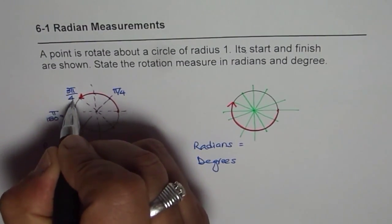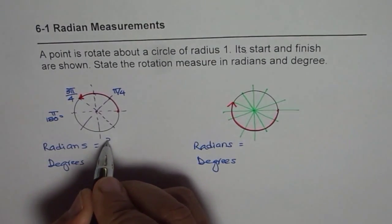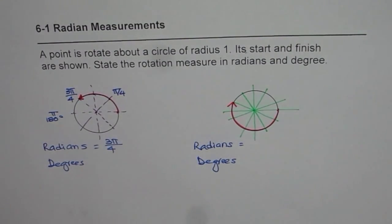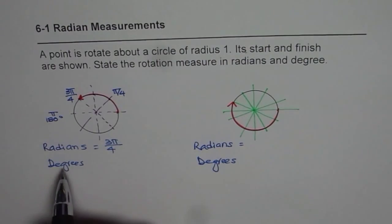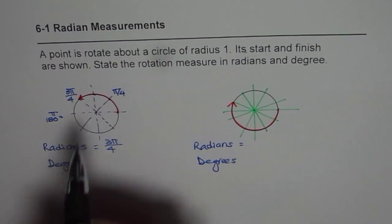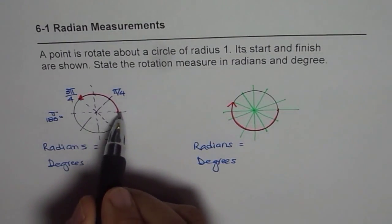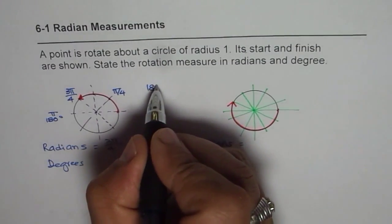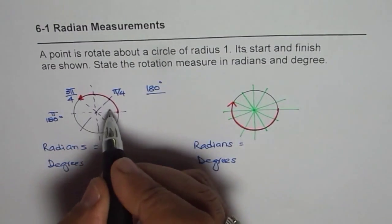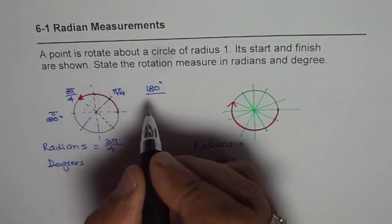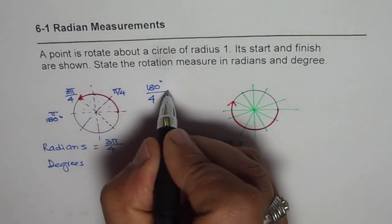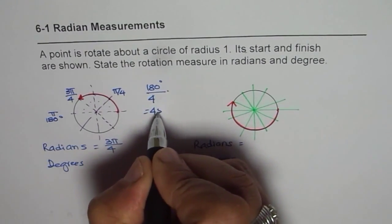So in radians, it is so simple. It is 3 pi by 4, perfect. As far as degrees are concerned, we have divided 180 degrees, so we have divided 180 degrees into 4 parts. 4 parts, that means each is 45 degrees, perfect.